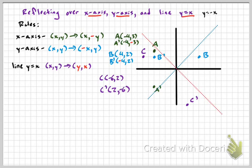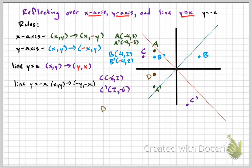The line Y equals negative X is this red dotted diagonal line. To reflect over Y equals negative X, XY becomes negative Y, negative X. So if point D is at negative 4, negative 1, then D prime would be at positive 1, positive 4 — you switch the values and change their signs. The pre-image and the image are equidistant to the line of reflection.